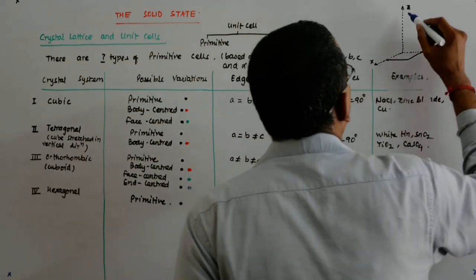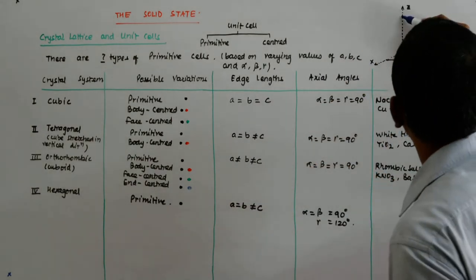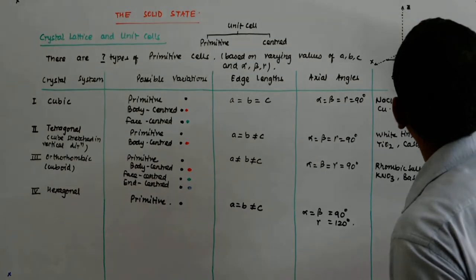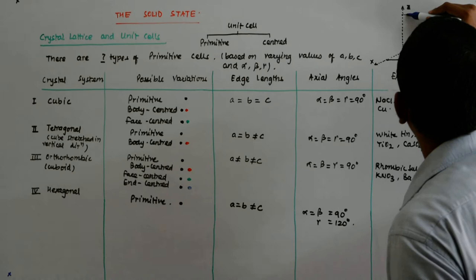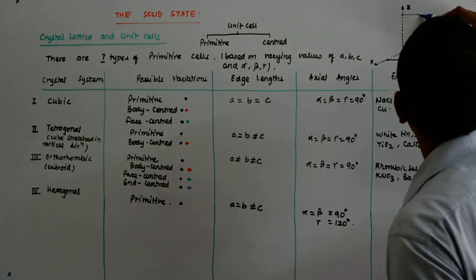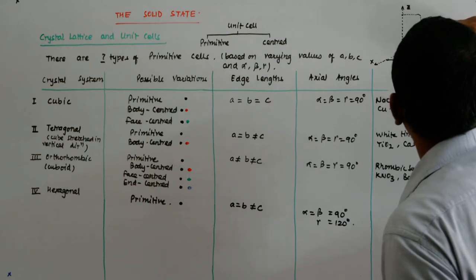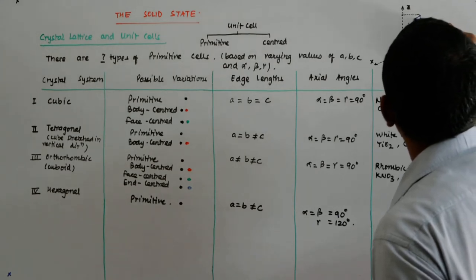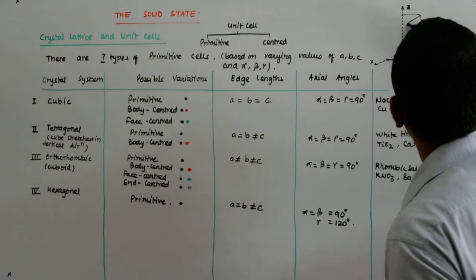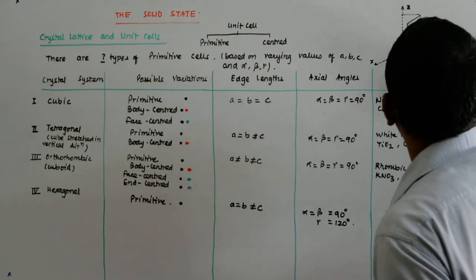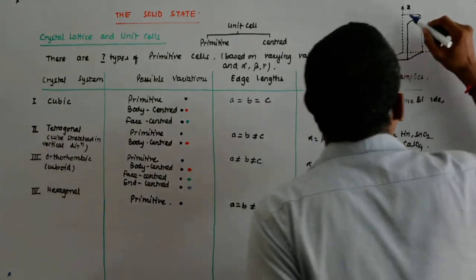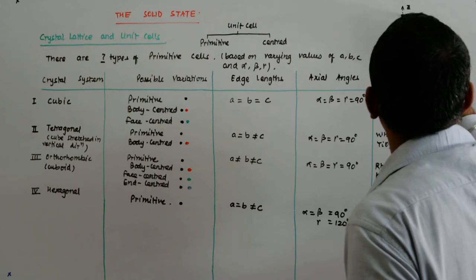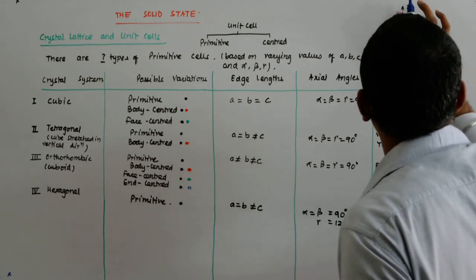a equals b, but that is not equal to c, so c may be a bit taller. The points correspond — if there is a point here, it will map to this point at the same length. It goes like that, comes down like this — it has to be parallel to the lower face.